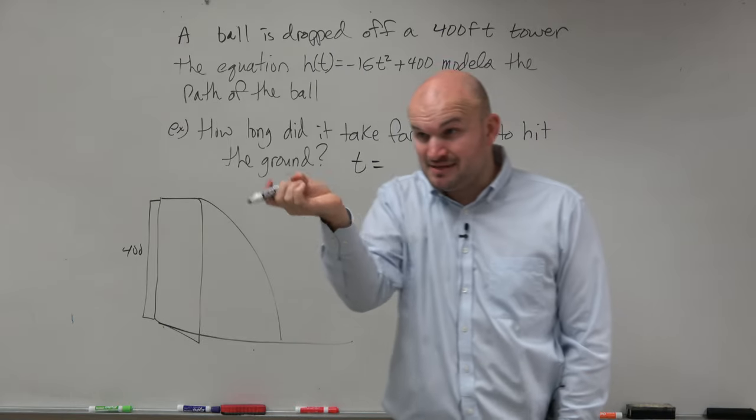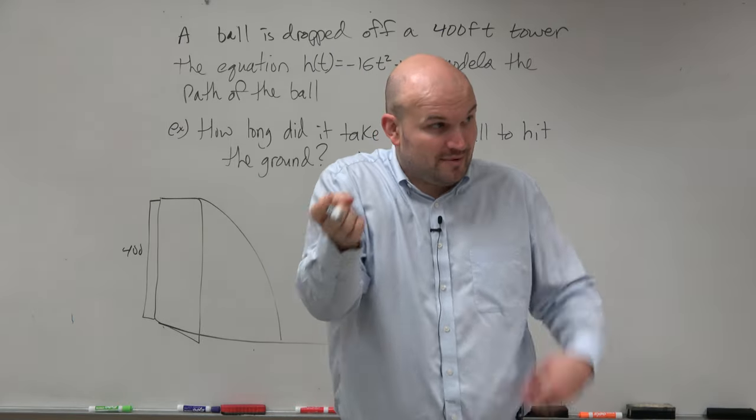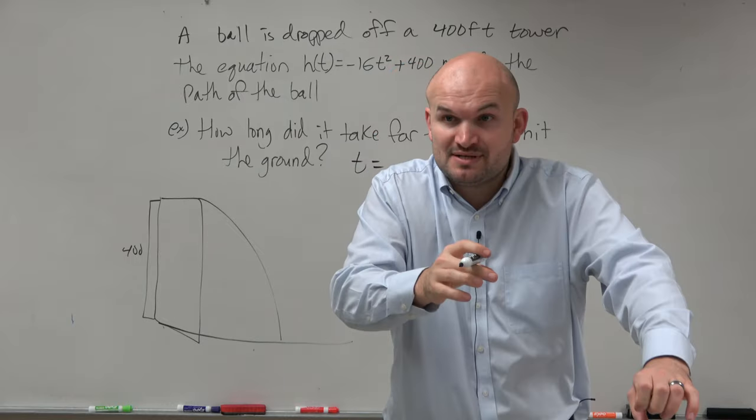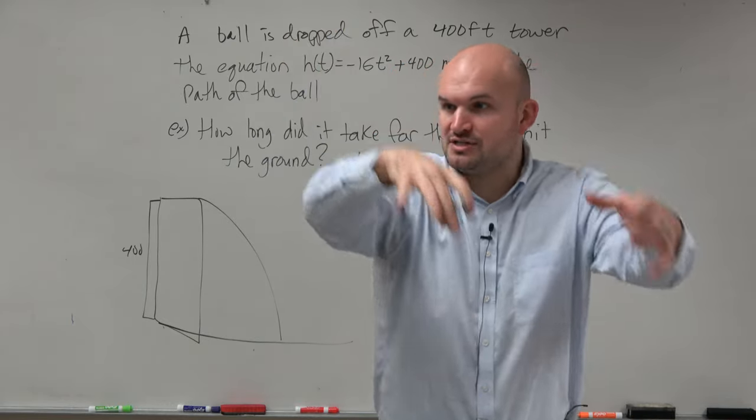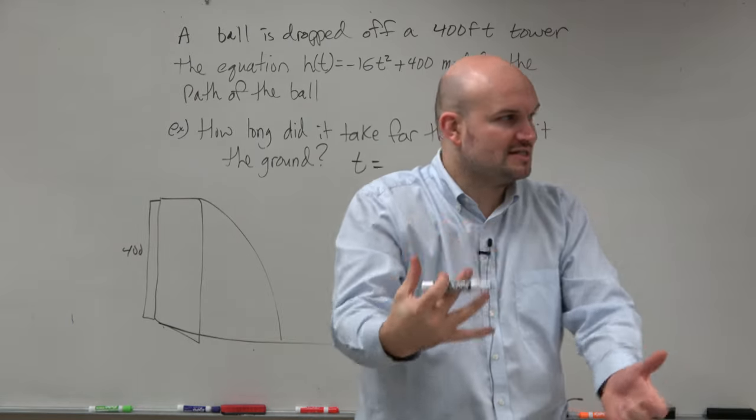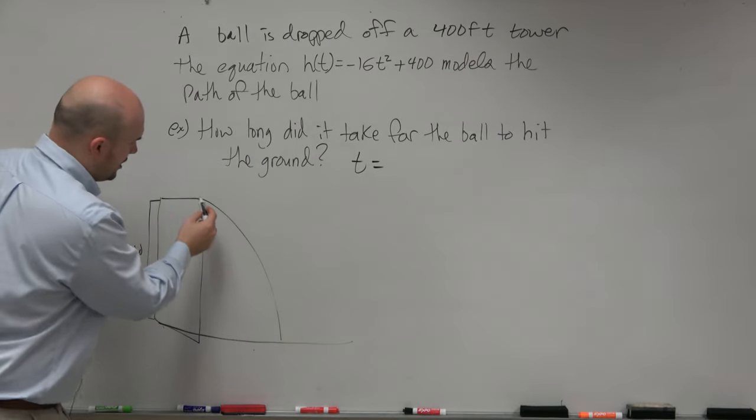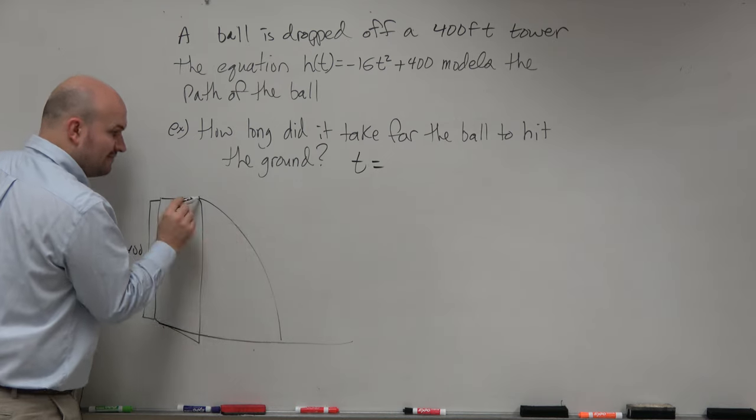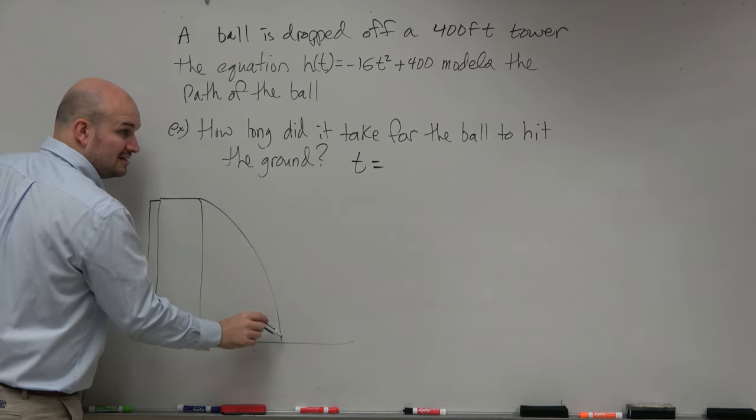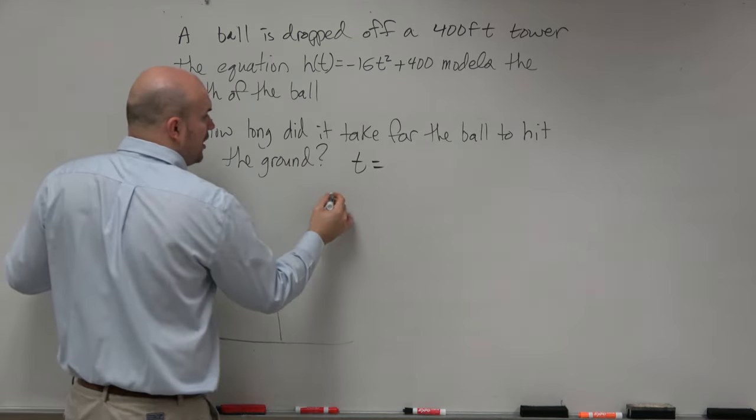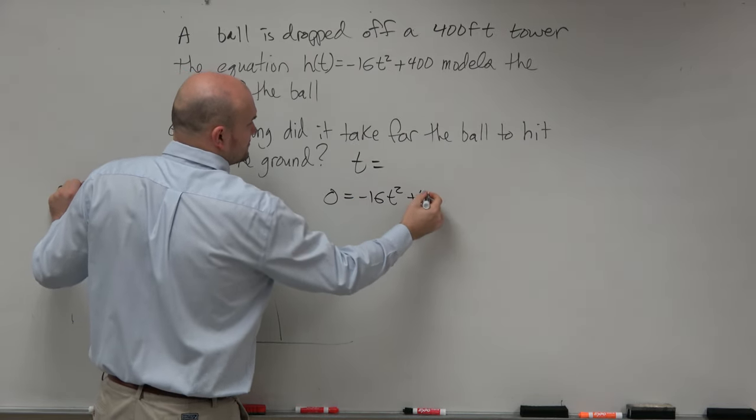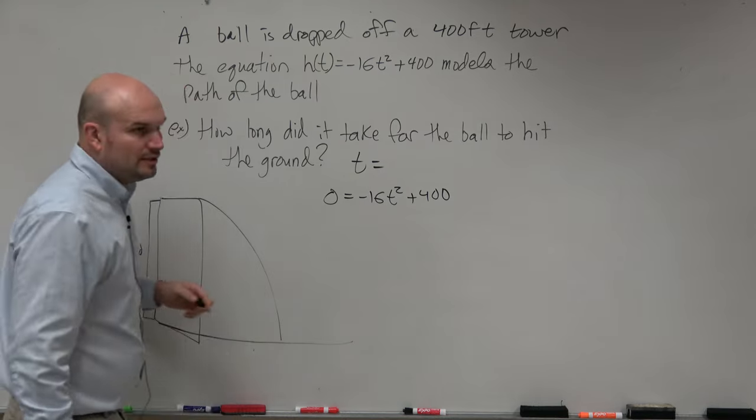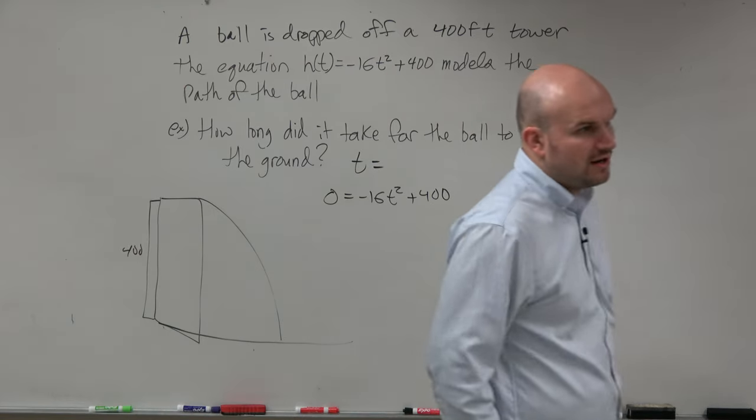Because time, when time is 0, that's like your initial time, right, that's when you start. That's before the ball dropped. It's 400 feet up on top of the tower, right? But after that, it starts to fall. And we want to know how long does it take for it to fall. So we want to know how long does it take for it to get from 400 all the way down to 0. So what we're doing is just solving a quadratic equation.